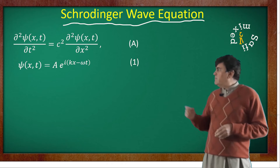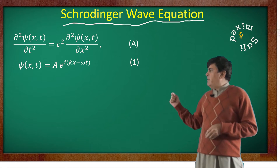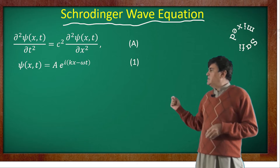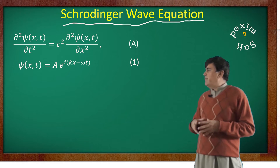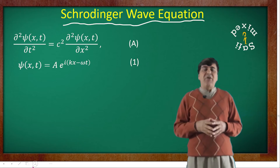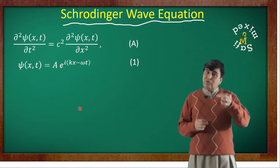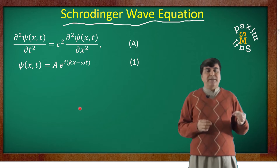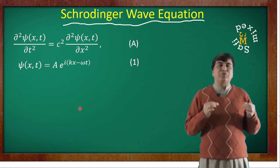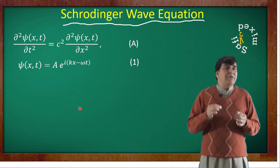In equation 1, A stands for the amplitude of the wave, K for the wave vector, and Omega represents the angular frequency of the wave. Now let us move to the most important part: the intuition of Schrödinger.